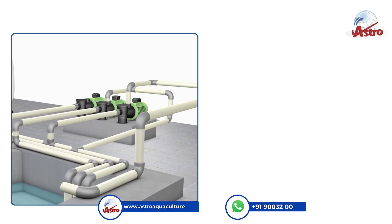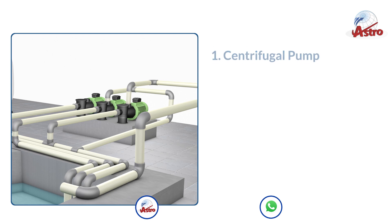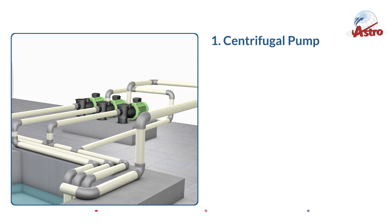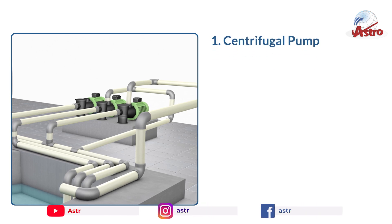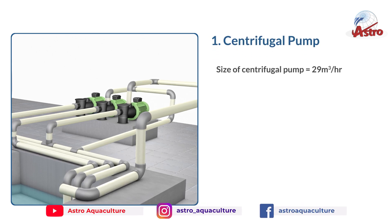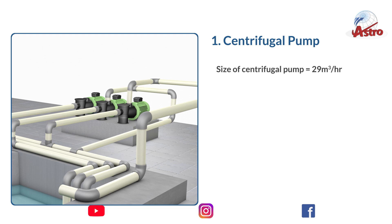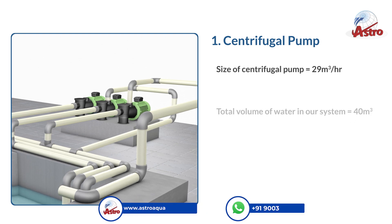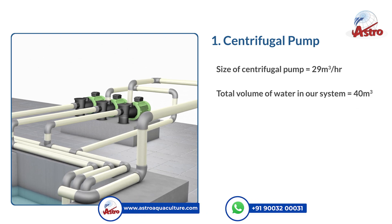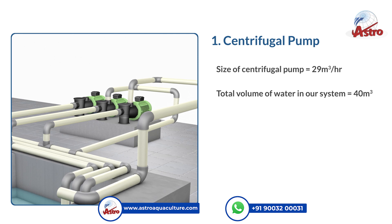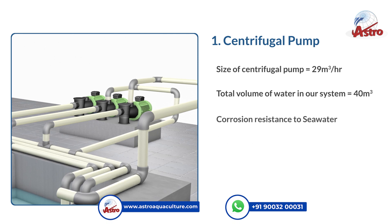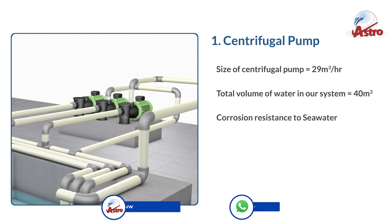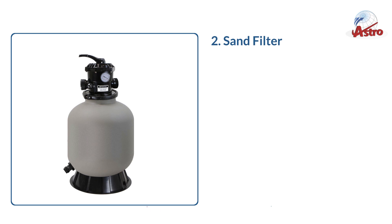Technical specifications: Centrifugal pump — size of centrifugal pump: 29 cubic meters per hour. Total volume of water in our system: 40 cubic meters. Corrosion resistance to sea water.